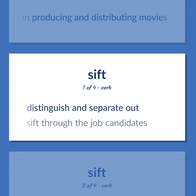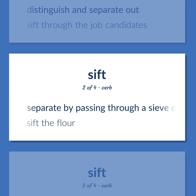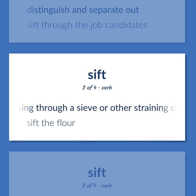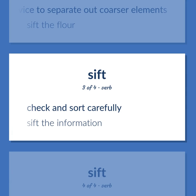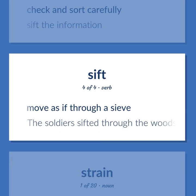Distinguish and separate out. Sift through the job candidates. Separate by passing through a sieve or other straining device to separate out coarser elements. Sift the flour. Check and sort carefully. Sift the information. Move as if through a sieve. The soldier sifted through the woods.